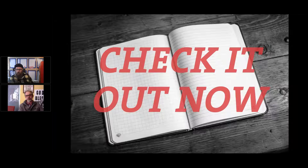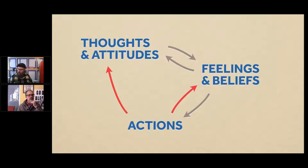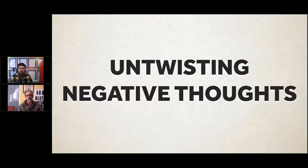Looking at this cycle again: thoughts and attitudes influence our feelings and beliefs, and our feelings and beliefs affect our actions. What you just did in writing these things down and looking at them is an action that helps complete this cycle. That action changes your thoughts and attitudes and can affect your feelings and beliefs. It allows your feelings — the moods and sense of despair — to feel less out of control. You can come in, look at them, and untangle a bit.